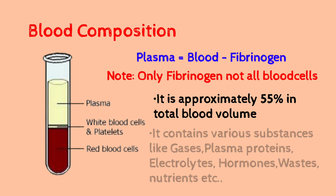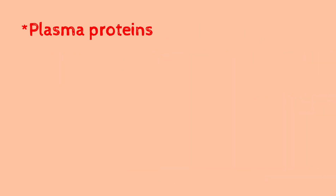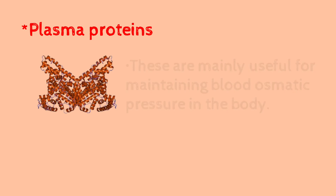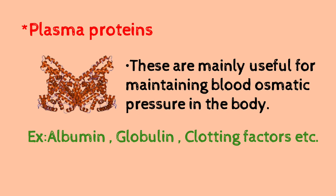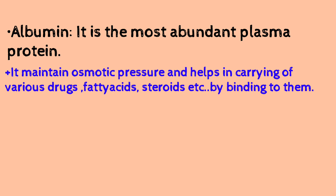Now we need to understand plasma proteins. Plasma proteins help maintain osmotic pressure. There are different types of plasma proteins: albumin, globulin, and clotting factors. First, albumin — it maintains osmotic pressure and also acts as a carrier protein for drugs, fatty acids, and steroids.